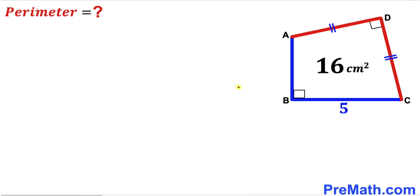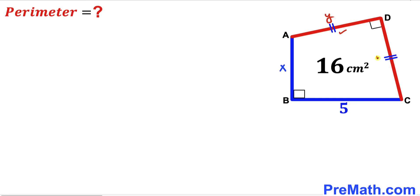Let's get started. We can see that only this side length is known, which is 5 centimeter, while this side length is unknown, likewise this side length is unknown, and this side is unknown as well. I'm going to label this side x and I'm going to label this side y, and since this side is equal to this side, this side has got to be y as well.